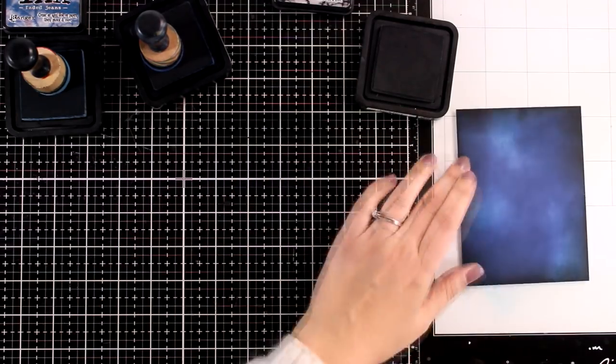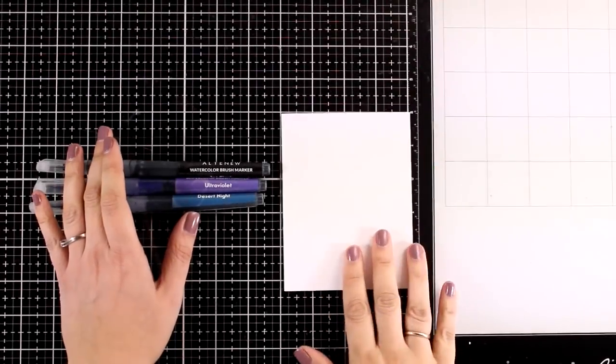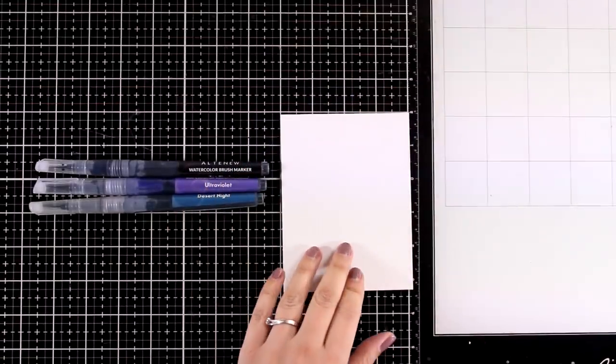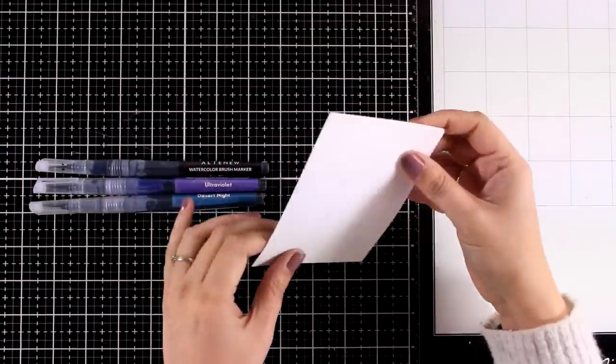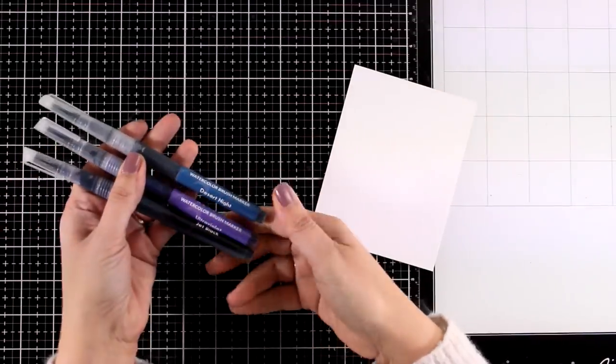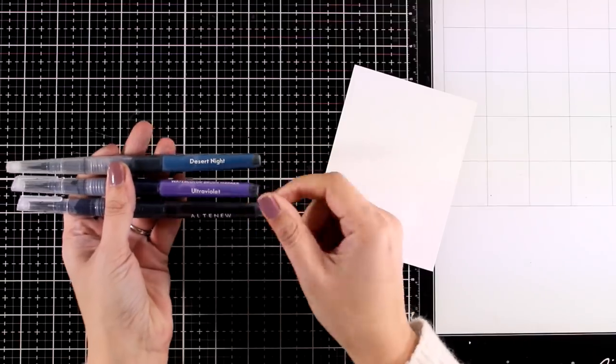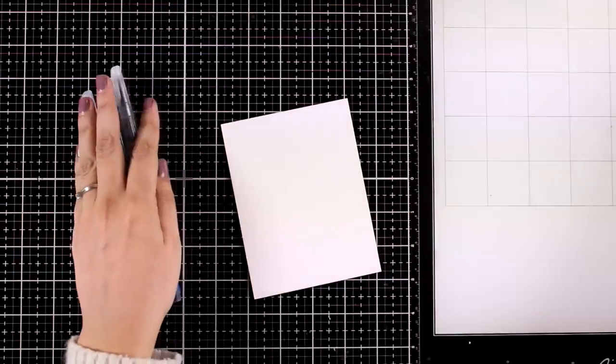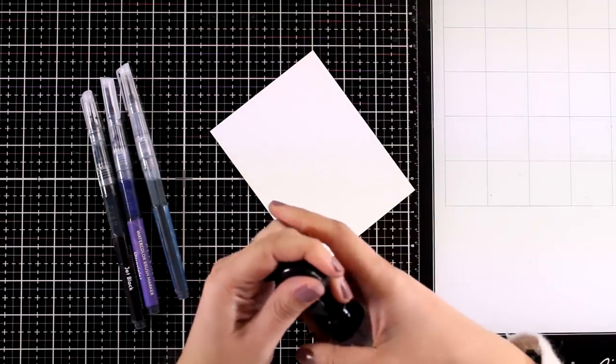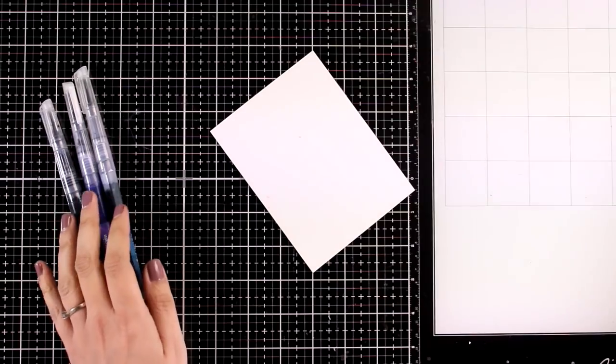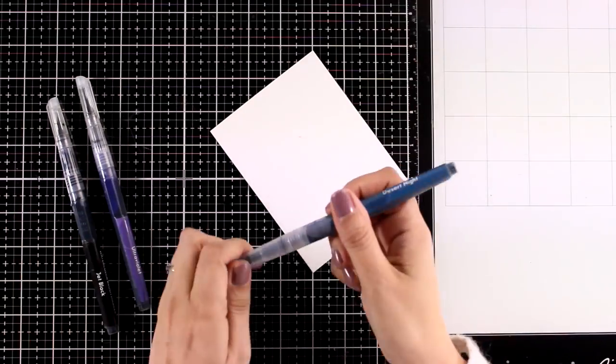This time I'm going to work with watercolor markers and you can do the exact same thing with any brand of watercolor markers or you can even use your watercolors with a brush. This time I'm working on thick watercolor paper and I decided to go with three colors which are similar to the ink that I used in the previous background. I always like to work wet on wet since this is going to help my colors blend even better.